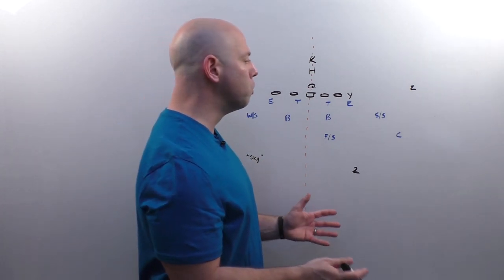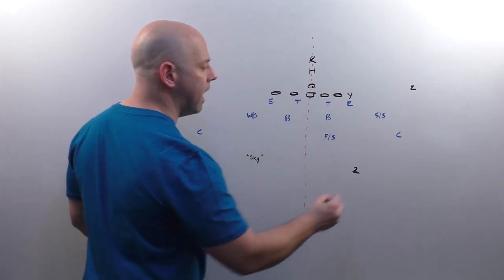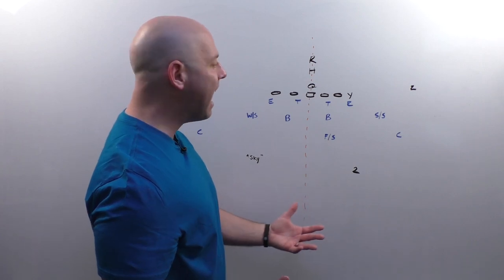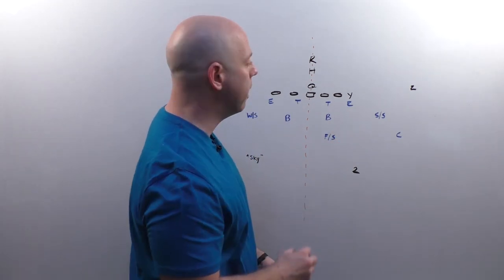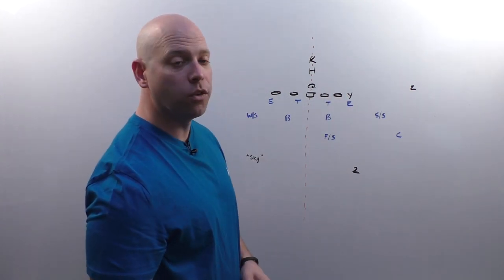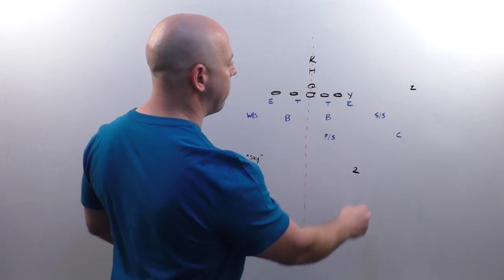It is really, truly a two coverage. The corner on the backside and the corner here are responsible for deep half. And the free safety is not going to be in a deep middle here. He is responsible if he gets a vertical by number two, but he's not just playing a deep middle zone. So you really have deep half players.